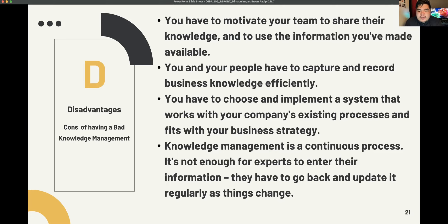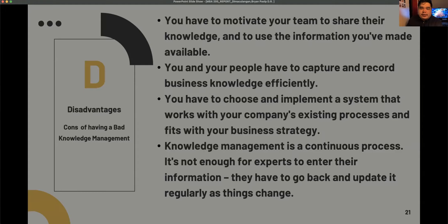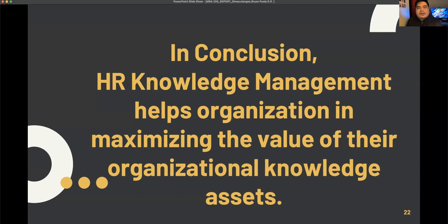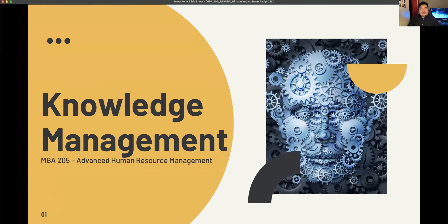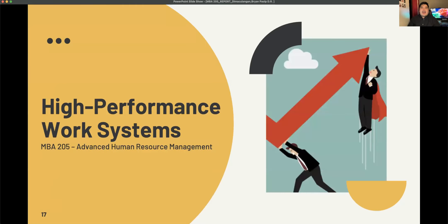Lastly, knowledge management is a continuous process. It is not enough for experts to enter their information — they have to go back and update it regularly as things change. In conclusion, human resource knowledge management helps organizations in maximizing the value of their organizational knowledge assets. That concludes my report for knowledge management. Let us now proceed with High Performance Work System.